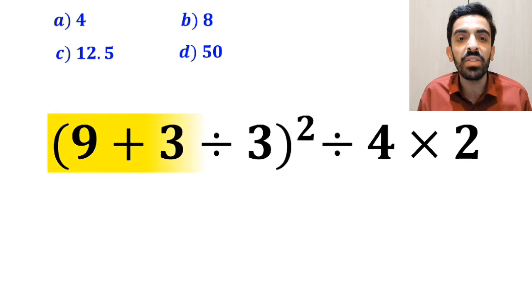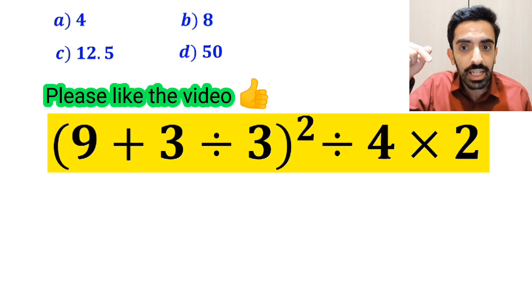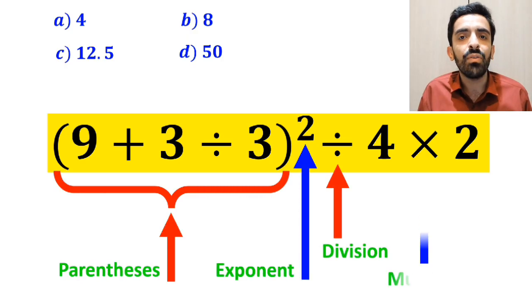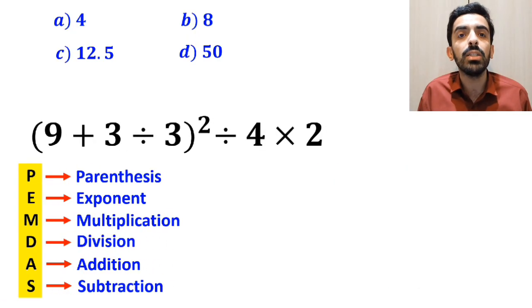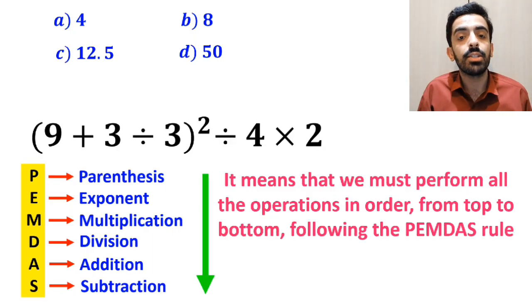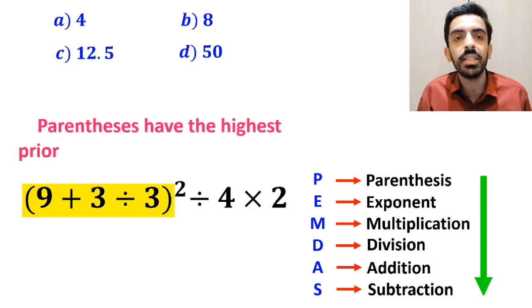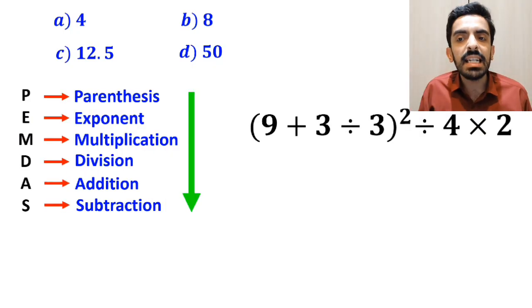Now let's go step by step together and solve this question correctly. As you can see on the screen, in this expression we first have a parenthesis, then an exponent, followed by a division sign, and finally a multiplication. To solve this, we need to follow the PEMDAS rule exactly — performing all operations in order from top to bottom. So first we start with the expression inside the parenthesis, because parentheses have the highest priority. Inside the parenthesis, we have an addition sign followed by a division sign.